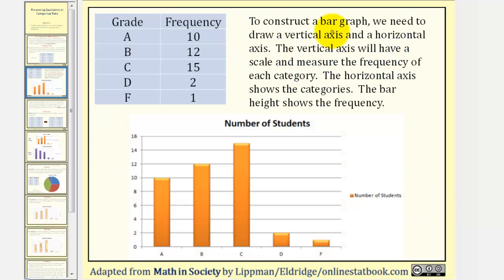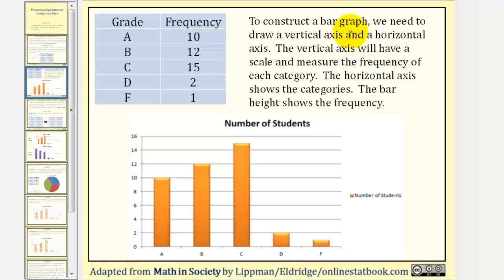Let's begin by displaying this information as a bar graph. To construct a bar graph, we need to draw a vertical axis and a horizontal axis. The vertical axis will have a scale and measure the frequency of each category. Here's our vertical axis; notice how the largest frequency is 15, and therefore the vertical axis is scaled to 16 by 2's.